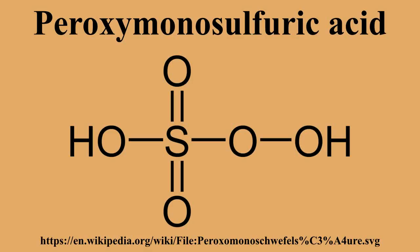H2SO5 was first described in 1898 by Heinrich Caro, after whom it is named. The laboratory-scale preparation of Caro's acid involves the combination of chlorosulfuric acid and hydrogen peroxide: H2O2 + ClSO2OH → H2SO5 + HCl.